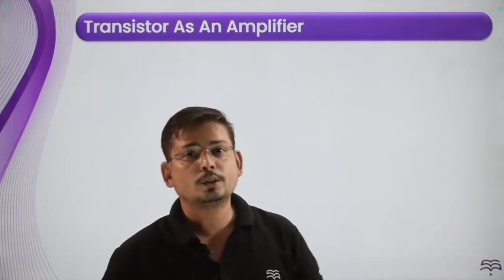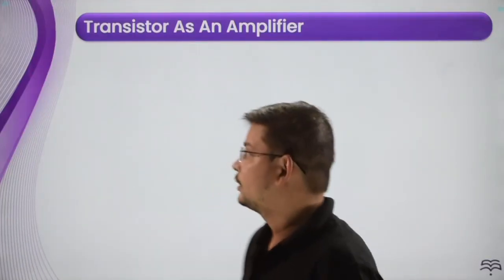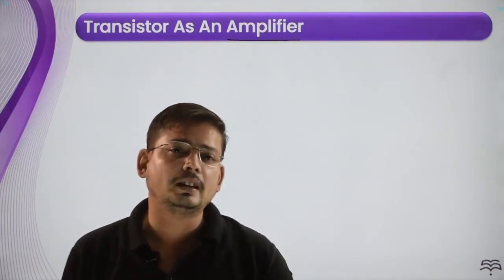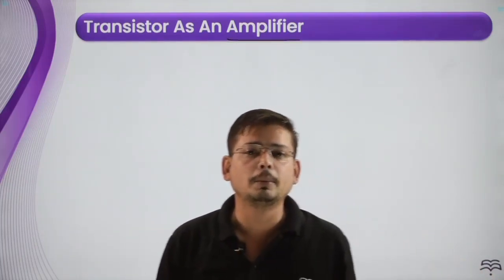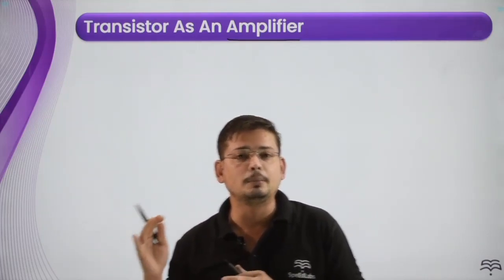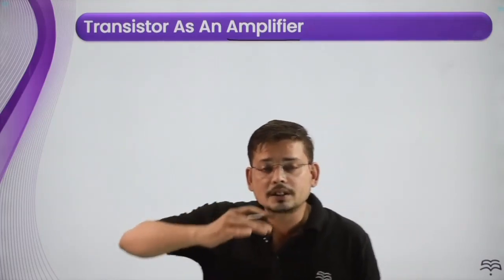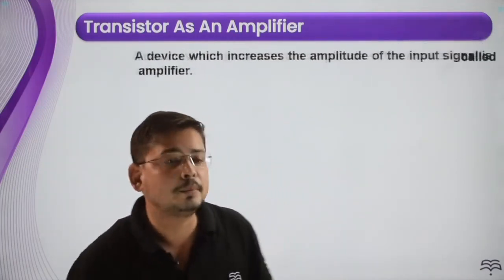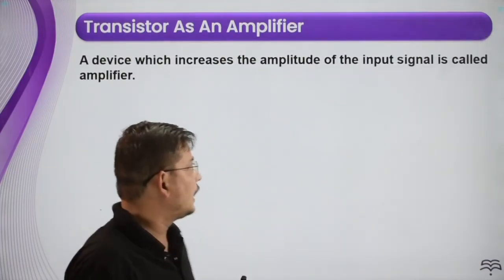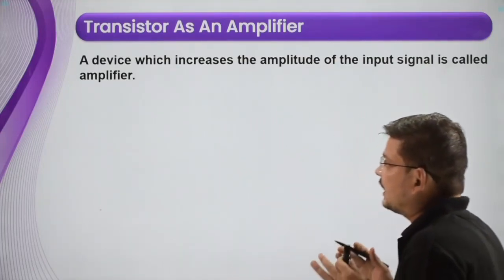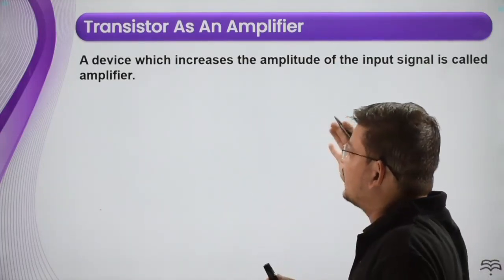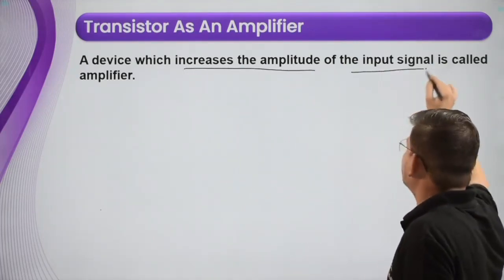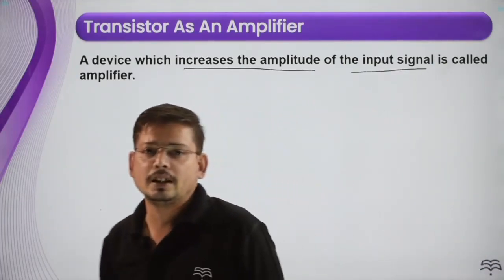Now we are going to discuss about the transistor as an amplifier. What is an amplifier? An amplifier is a device which amplifies — which increases the amplitude of the current or input signal. A device which increases the amplitude of the input signals is called the amplifier.